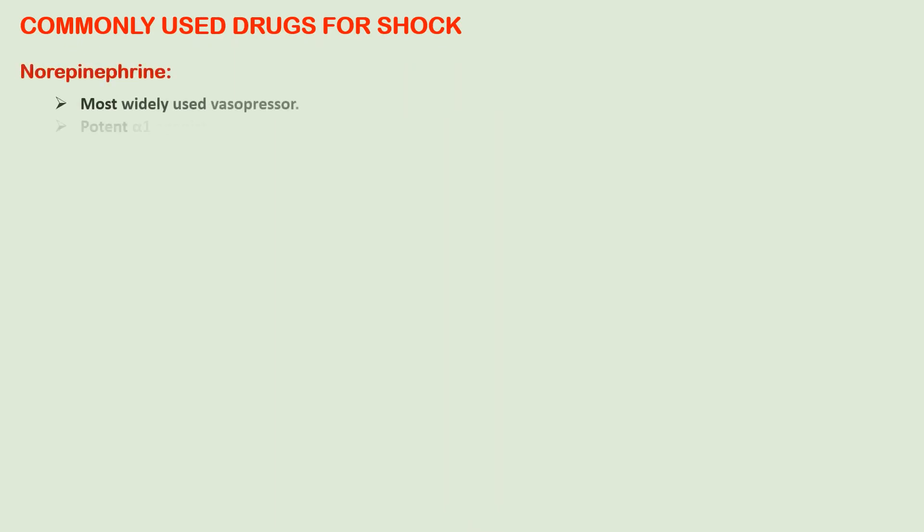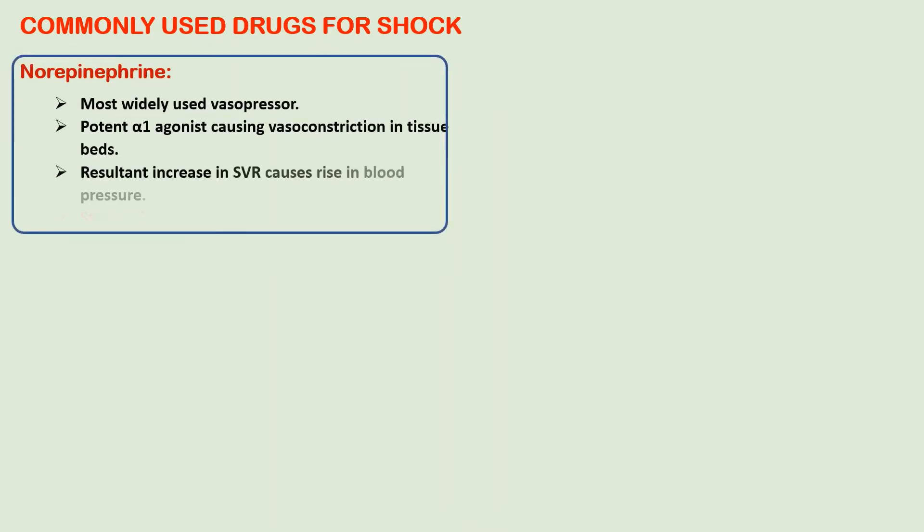The primary goal of shock therapy is to increase blood pressure, so we use vasopressor agents. These include norepinephrine, epinephrine, dopamine, and others. Norepinephrine is the most widely used vasopressor; it produces vasoconstriction by acting on alpha-1 receptors, increasing blood pressure by increasing systemic vascular resistance.